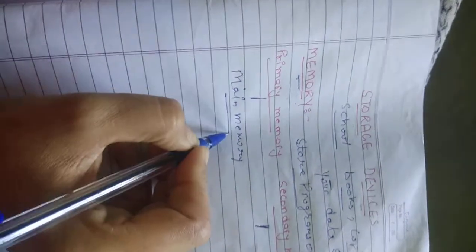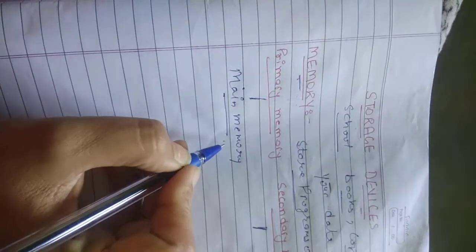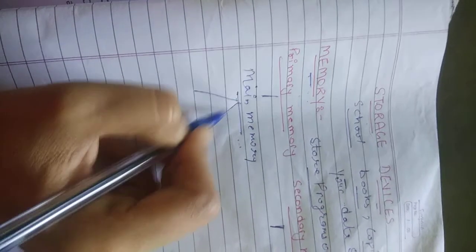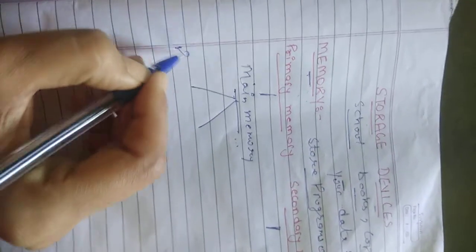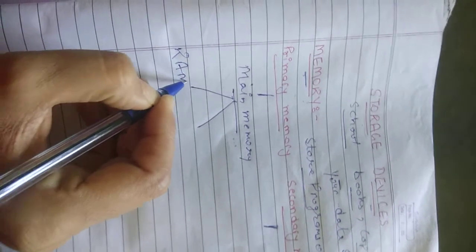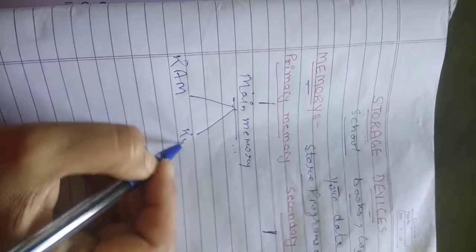It stores data and information when the computer is in operation and it is further also divided into two. First is RAM and second one is ROM.